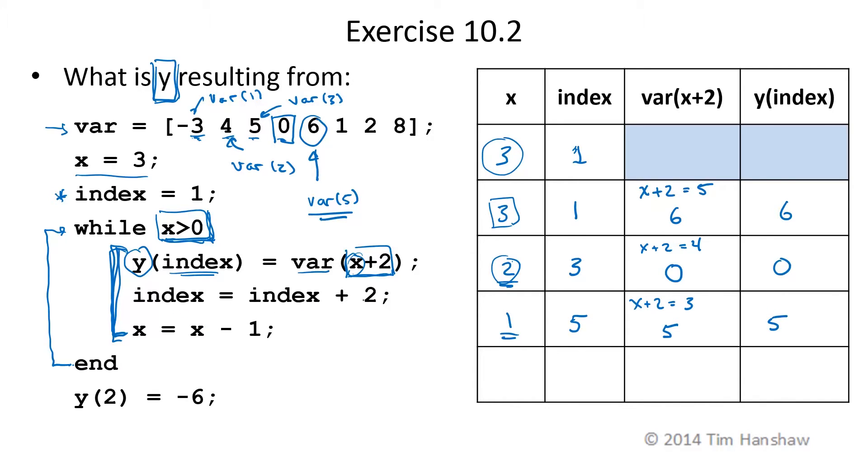So now index is equal to index plus 2. 5 plus 2 is 7. X is equal to X minus 1. 1 minus 1 is 0.